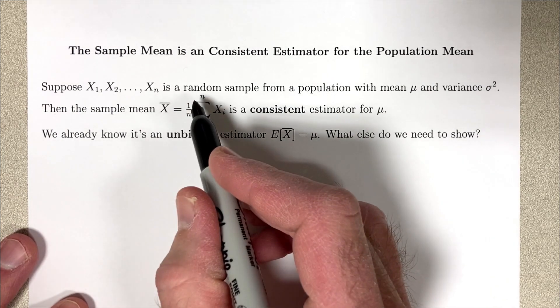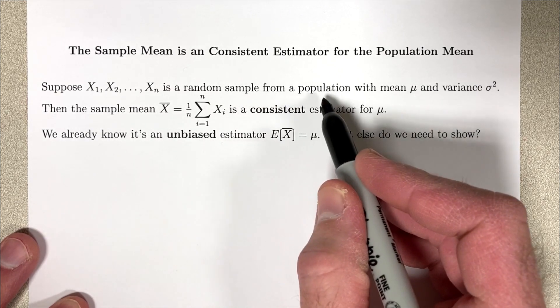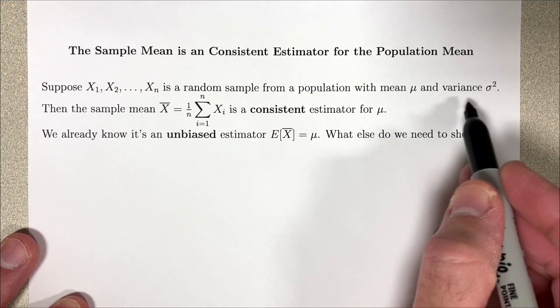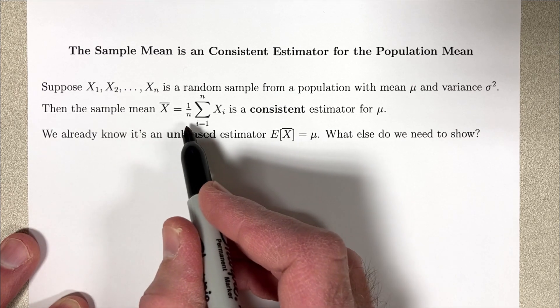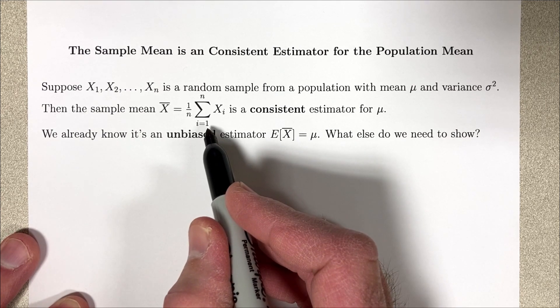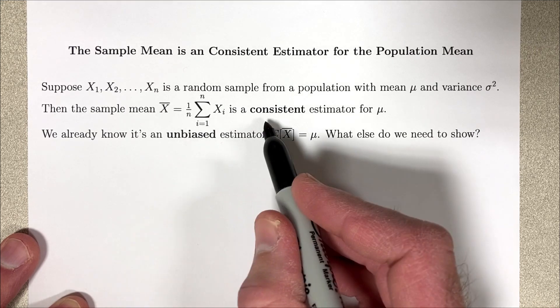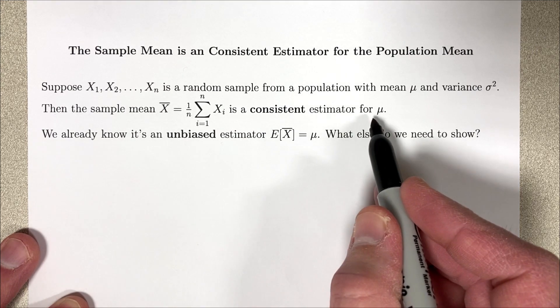Suppose x1 through xn is a random sample from a population with mean mu and variance sigma squared. Then the sample mean x-bar, which equals 1 over n times the summation i goes from 1 to n of xi, is a consistent estimator for the population mean mu.